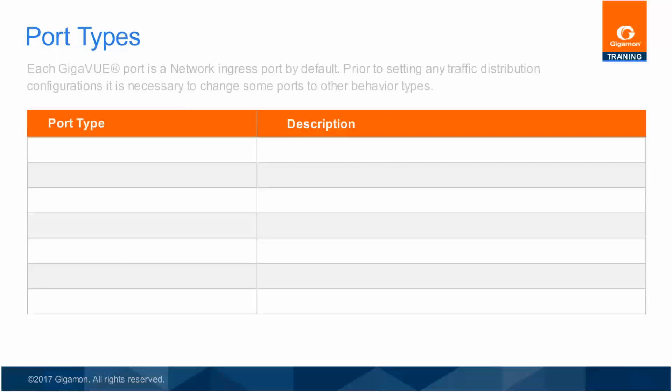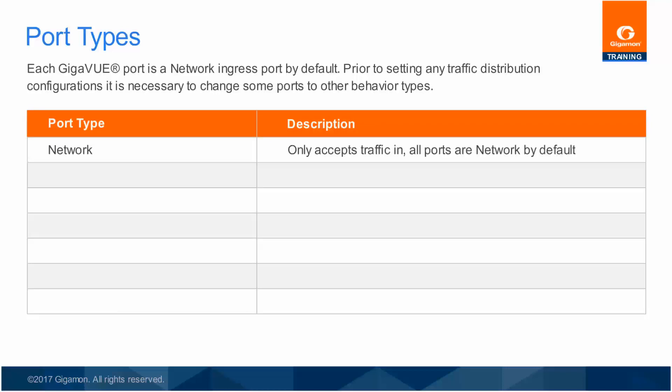There are two common port type configurations. The first port type is Network. The default state for all ports is to receive ingress traffic from switch span or mirror ports, or from taps. Network ports only receive traffic and never transmit.